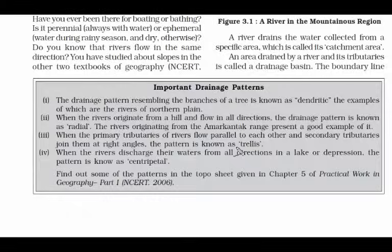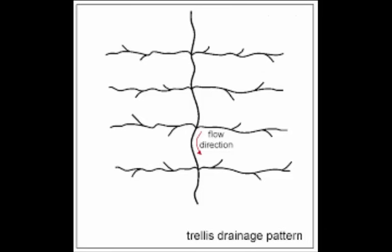The third type of drainage pattern is called trellis. Trellis drainage is when the primary tributaries of rivers flow parallel to each other, and then the secondary tributaries coming out of these primary tributaries form right angles. That pattern is known as trellis.